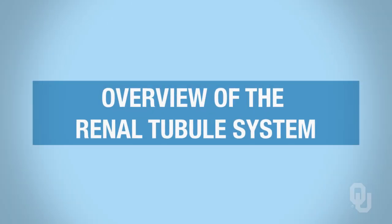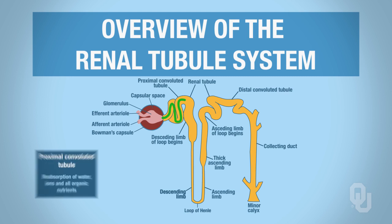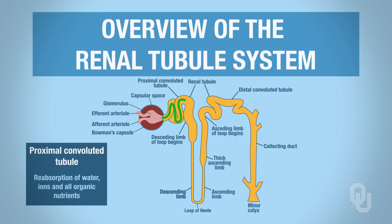Just to recap, we're dealing with a nephron and there's various regions or tubules that make up the nephron. There's the proximal convoluted tubules, so when filtrate—we'll do this in green—when filtrate leaves the glomerulus, it's filtered, it's got to travel through the proximal convoluted tubules. In the proximal convoluted tubules you can have reabsorption of water and some ions and some organic things as well.